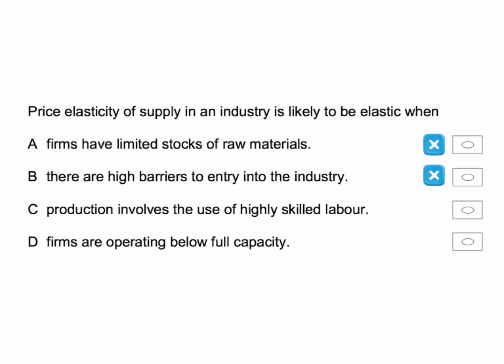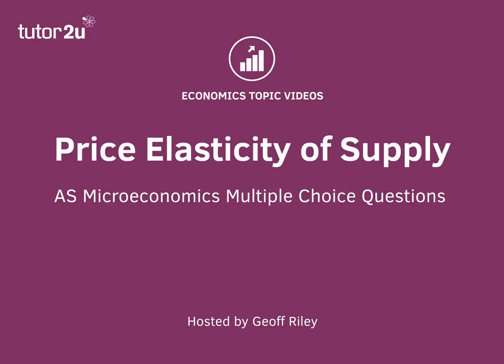Option C: production involves the use of highly skilled labour — that's wrong because that means labour is less substitutable; capital probably can't do the job that labour can do. Option D: firms are operating below full capacity — yes, that's one of the key conditions for supply to be elastic. When you're below your production possibility frontier, you can increase output fairly easily and supply will be elastic in the market. That's our multiple choice question on price elasticity of supply.